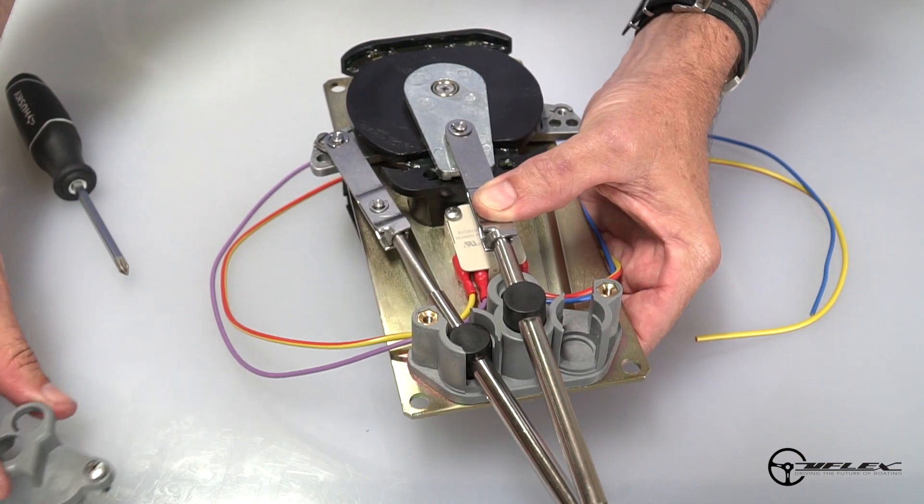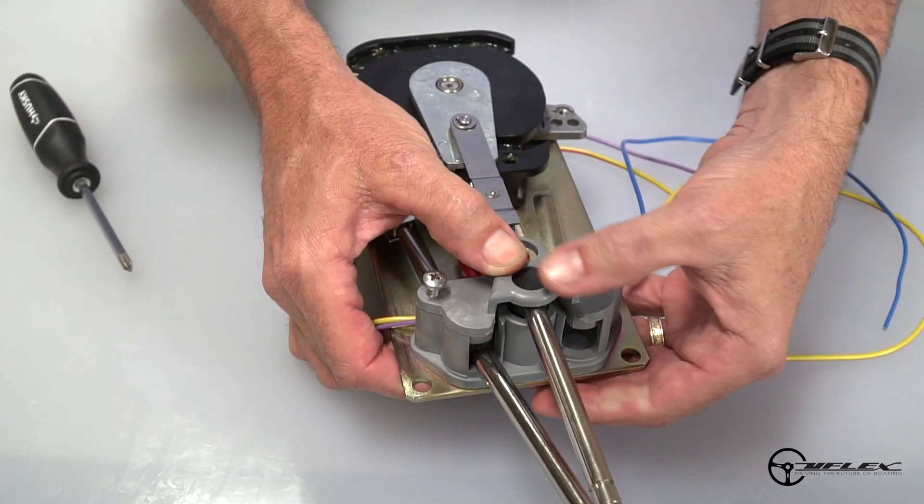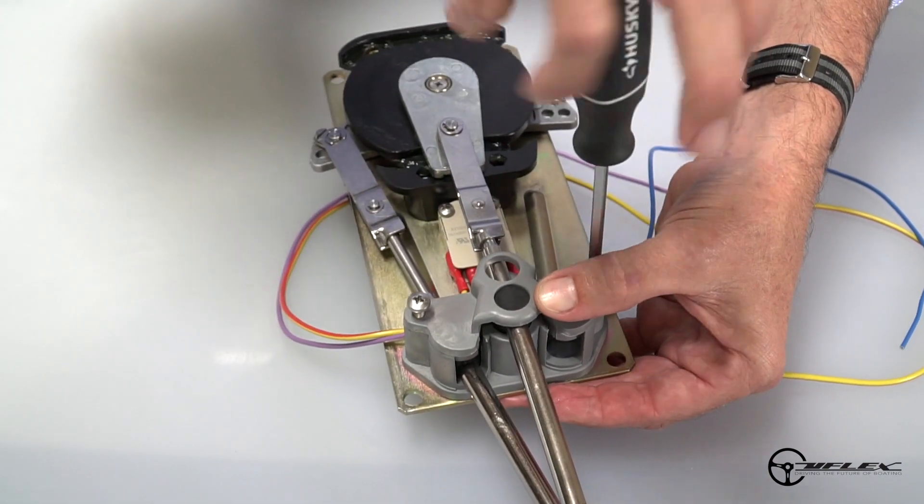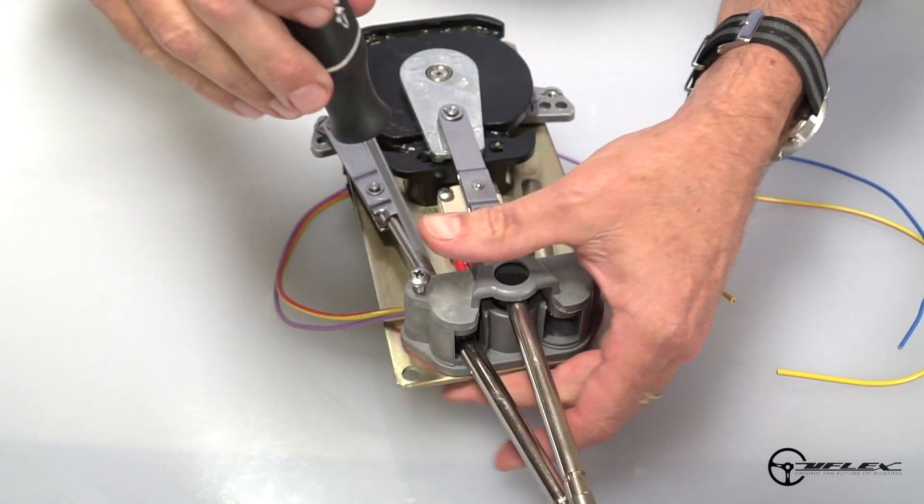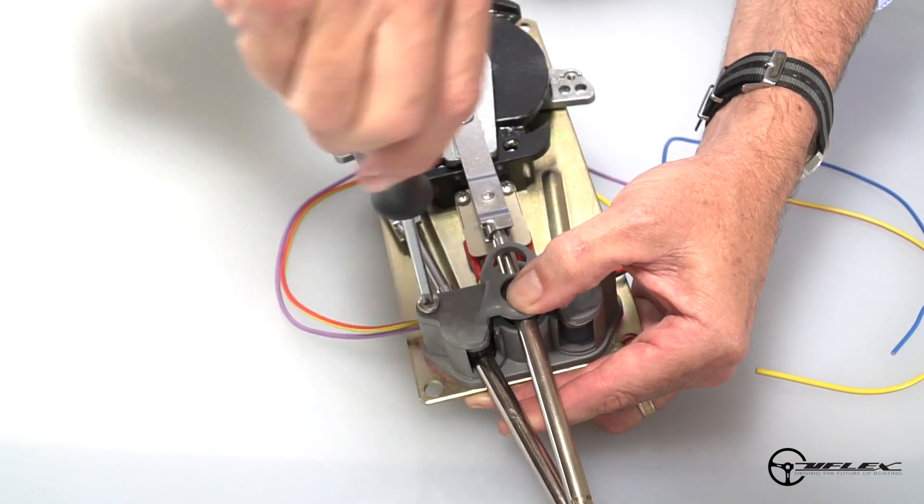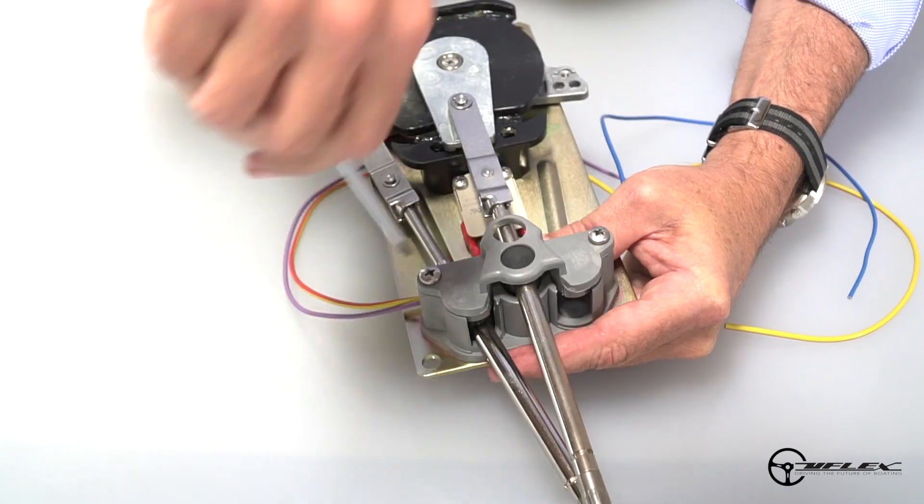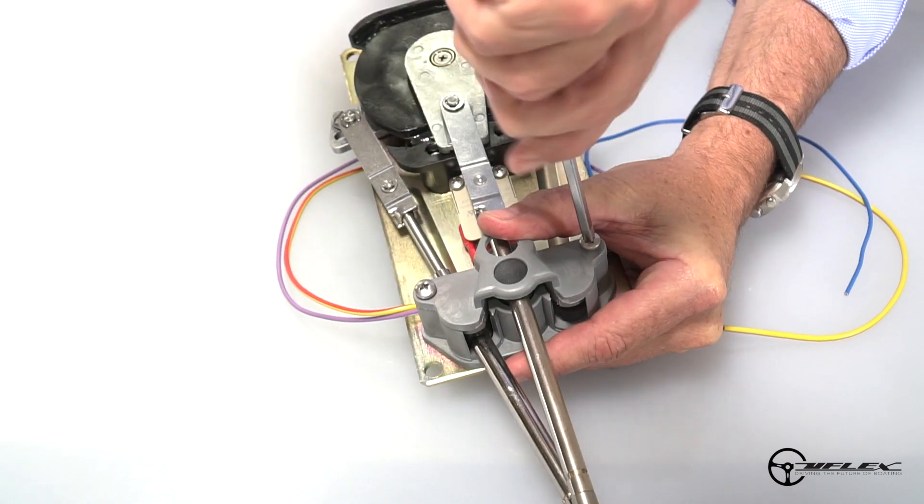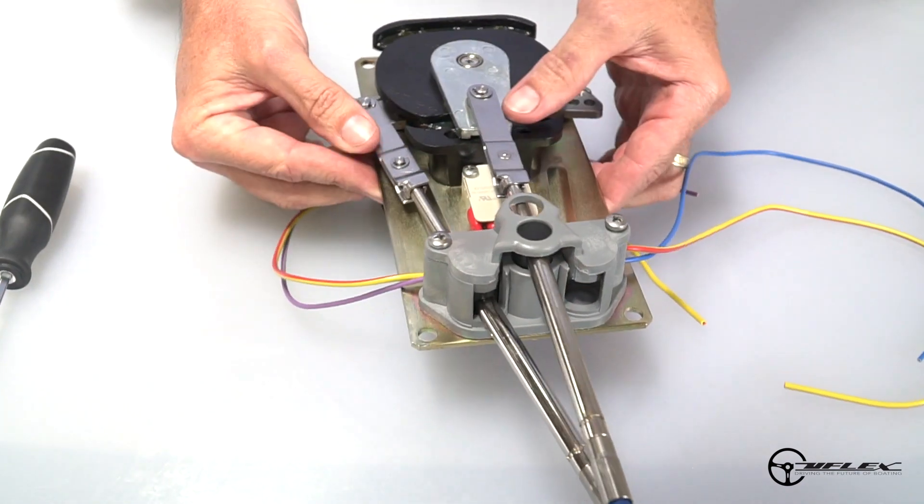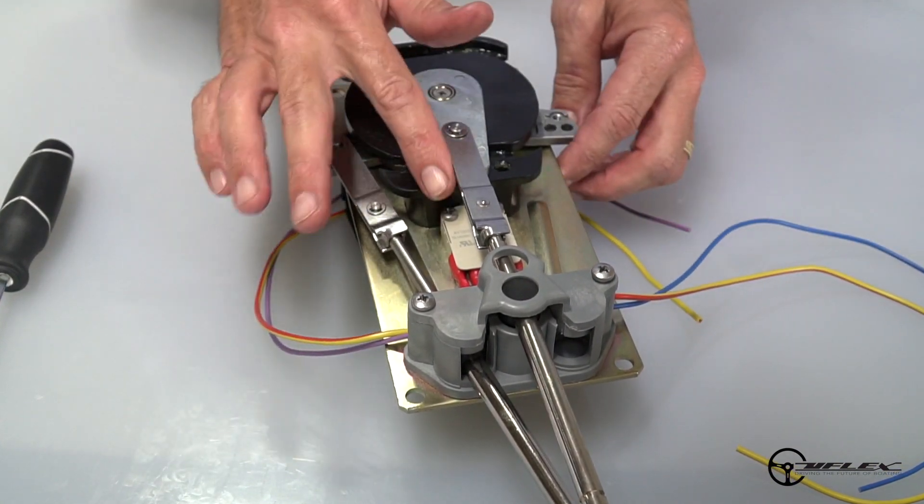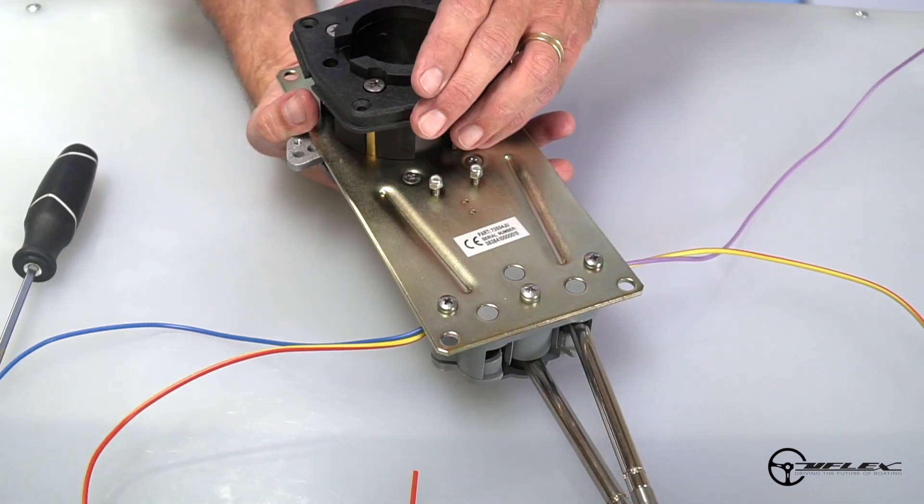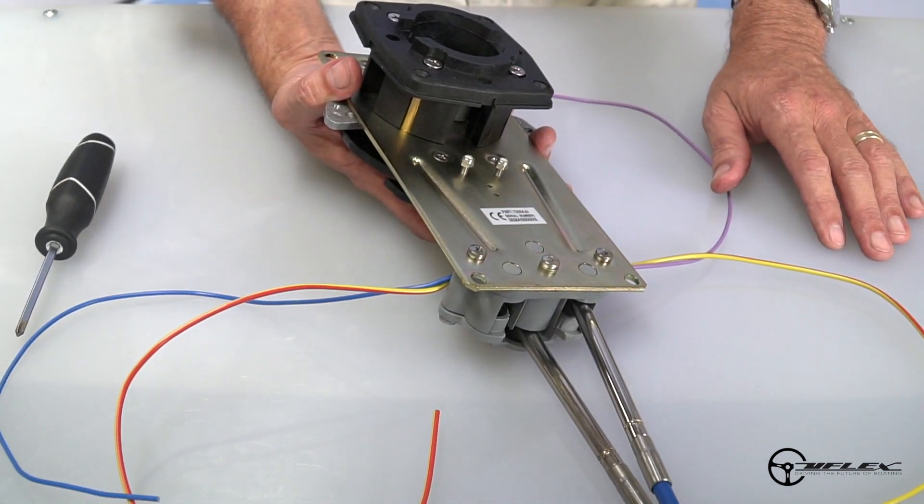The last step to installing the control cable is to put this component right over the top, making sure there's a good fit between those parts and they're well-connected and retained. Then I tighten these screws. Now I've got the two cables installed, my neutral safety switch, throttle cam in the proper orientation, shift cam in the proper orientation, and my flange all set and ready to install into the rest of the boat.